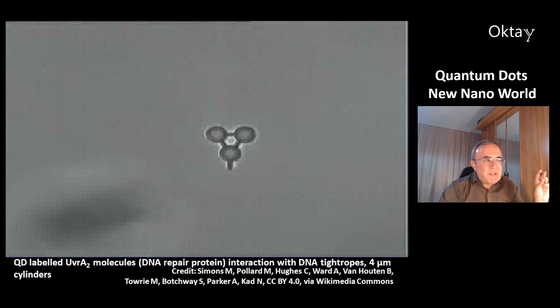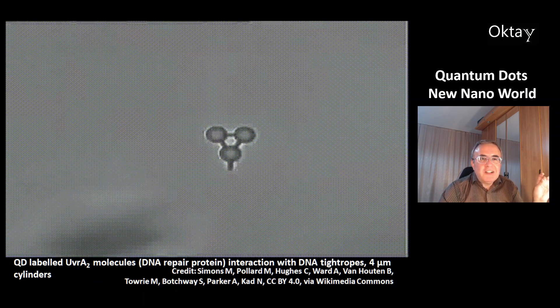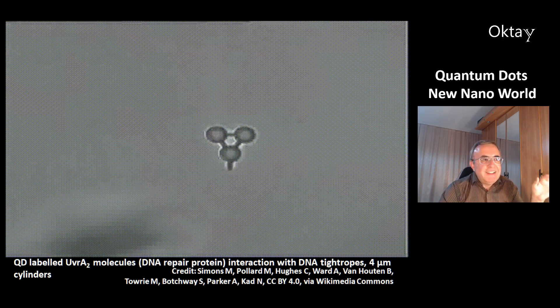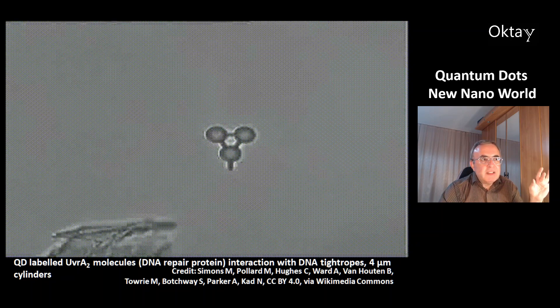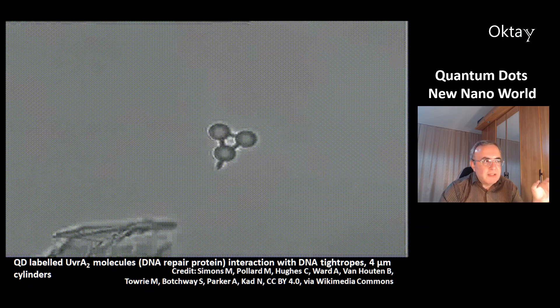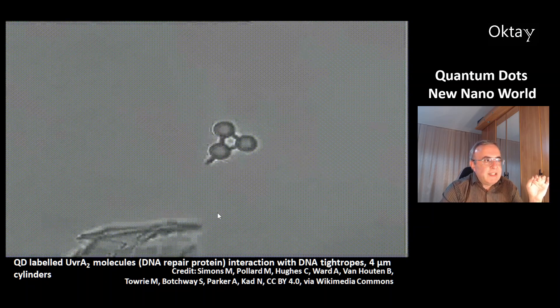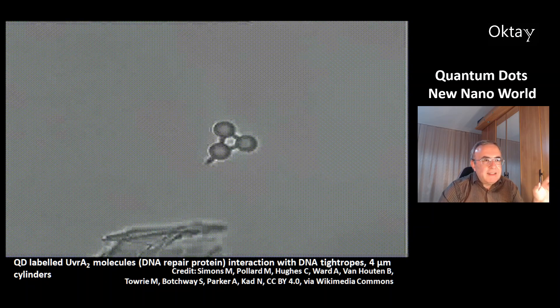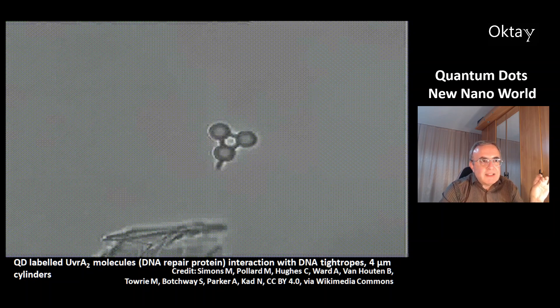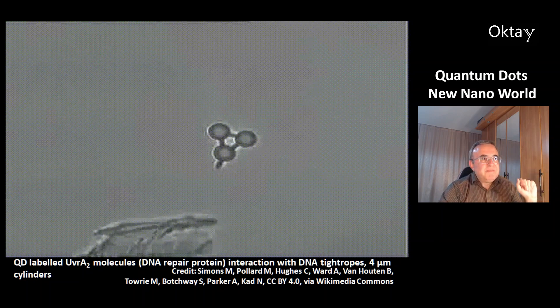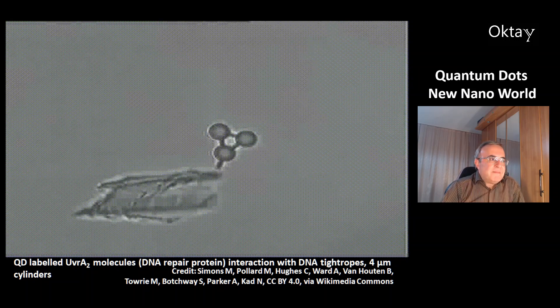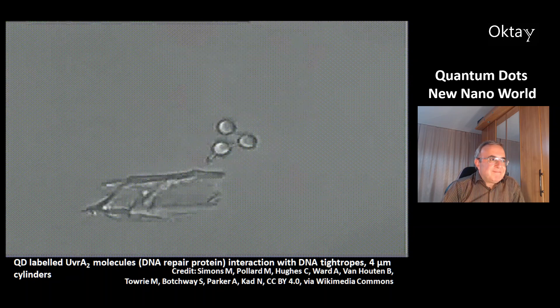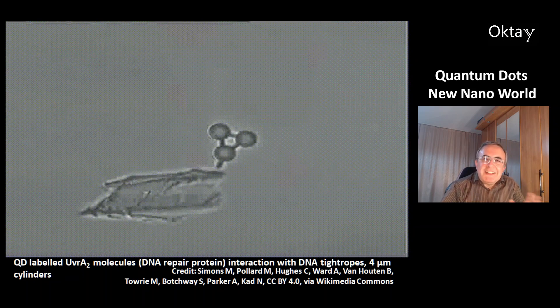This is a quantum dot labeled UvrA2 molecules. And these are DNA repair proteins. This animation shows its interaction with the DNA tightropes at the bottom. These are DNA tightropes. And these three cylinders have each size of four micrometers. This is very fascinating.